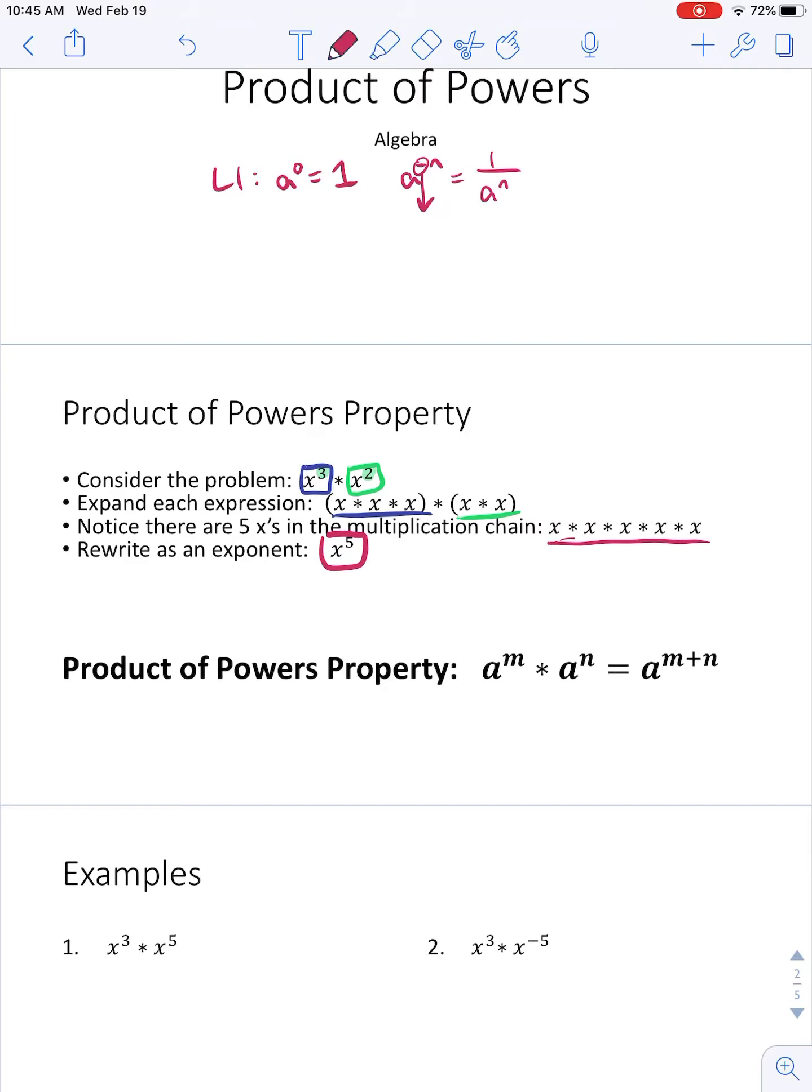And the way we write that as a formal rule is right here. If I have m a's and n a's, all together I have m plus n a's. And that's our newest property, and that's the only one that we'll use in this lesson, other than the first two we might call back on.